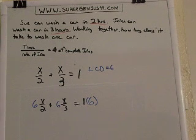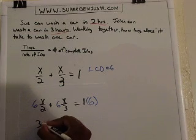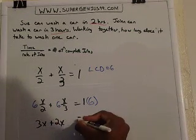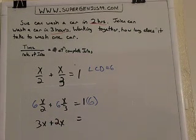Well, when I reduce six times x over two, that becomes three x. Six times x over three, that becomes two x. And six times one is six.